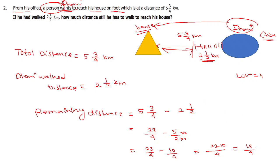The remaining distance is 13 by 4 km, but this is improper. So 3 remainder 1, the quotient is 3. The remaining distance is 3 and 1/4 kilometers.